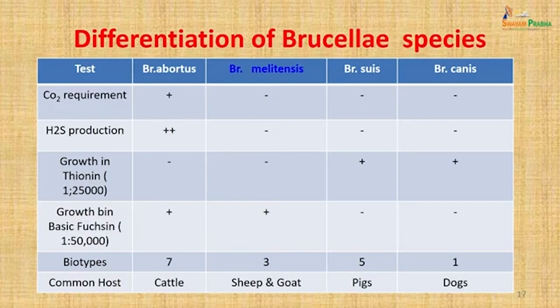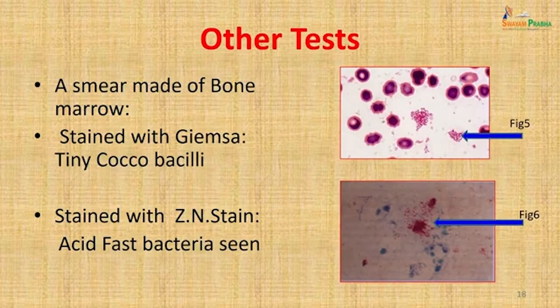Brucella abortus, B. suis, and B. canis are obtained from cattle, pigs, and dogs respectively. There are 7 biotypes of B. abortus, 5 of B. suis, and 1 of B. canis. A smear from bone marrow was stained with Giemsa, revealing tiny coccobacilli. It was also stained with ZN stain, revealing acid-fast bacteria as shown in the picture.